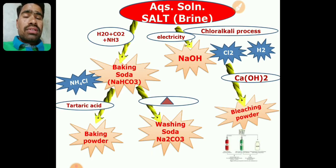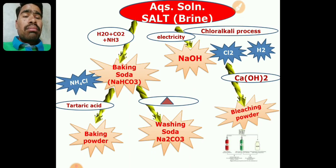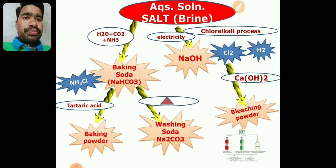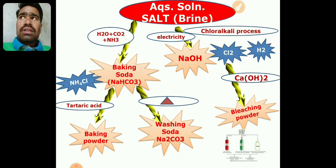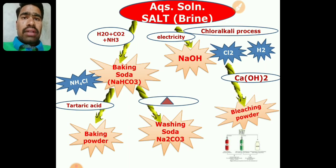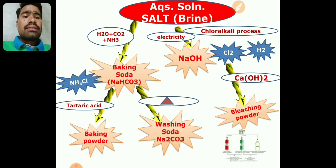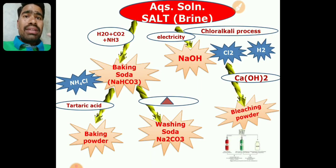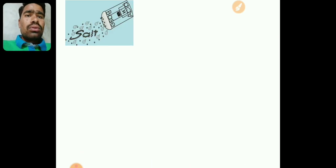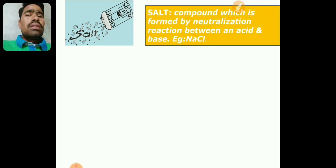The reason we use baking powder instead of baking soda is that in the baking process, heat is applied. During heating, baking soda decomposes to form washing soda (Na2CO3), which is bitter in taste, changing the cake's flavor. So baking soda is first converted into baking powder by adding a little tartaric acid. This makes the taste sweet and also gives the cake a pleasant smell.